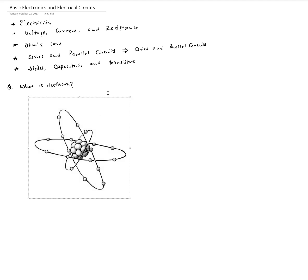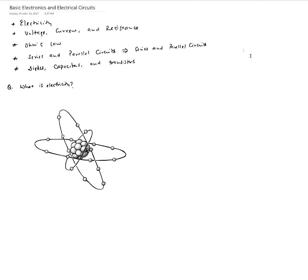We will start our discussion by looking at the structure of an atom. Atoms have a few fundamental particles: the nucleus, which contains protons and neutrons. Protons are positively charged particles while neutrons have no charge — they are neutral. Protons and neutrons are bound together in the nucleus via the strong nuclear force, and it takes a lot of force to break them apart. Surrounding the nucleus, electrons orbit in different shells and are negatively charged particles.